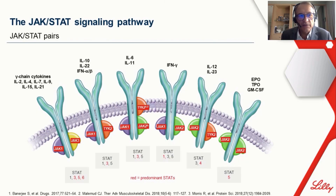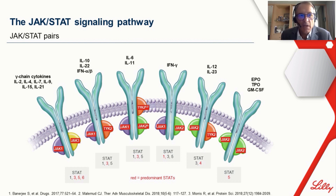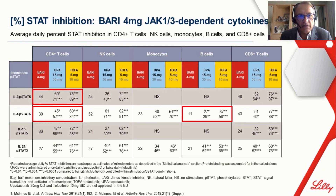First, he discussed the JAK-STAT signaling pathway and the selectivity of different JAK inhibitors. The JAK family members always pair in homo- or heterodimers, and their pairs interact inside the cell with a total of seven different STAT signal transducers and activators of transcription molecules. The slide shows STAT inhibition, mainly based on JAK-1/3 dependent cytokines.